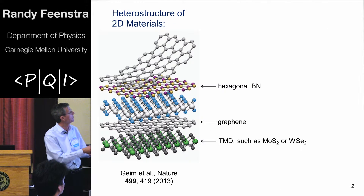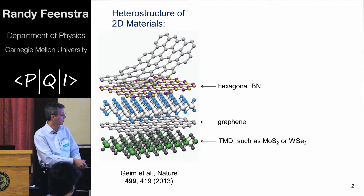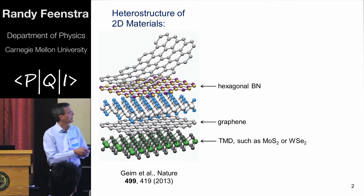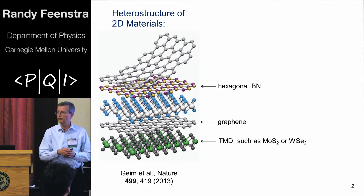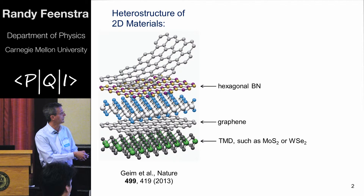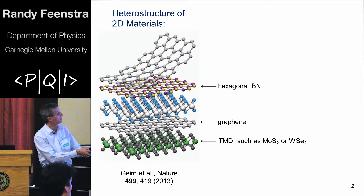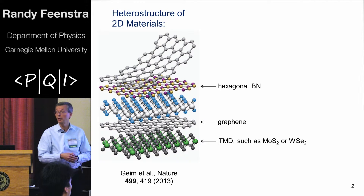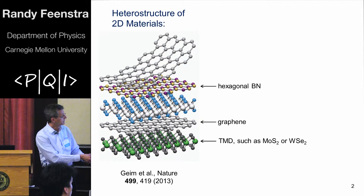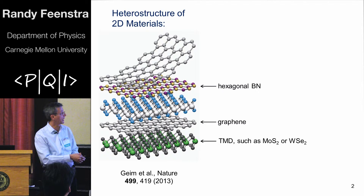Many of you have seen this picture before from a paper by Andre Geim about 2D heterostructures. Nowadays many groups around the world are able to build up heterostructures like this. They might contain graphene — a layer of carbon atoms — or hexagonal boron nitride with boron and nitrogen instead of carbon, which is an insulator, or some of these TMD materials like molybdenum disulfide, with the metal atoms in the middle and the chalcogen atoms on either side.